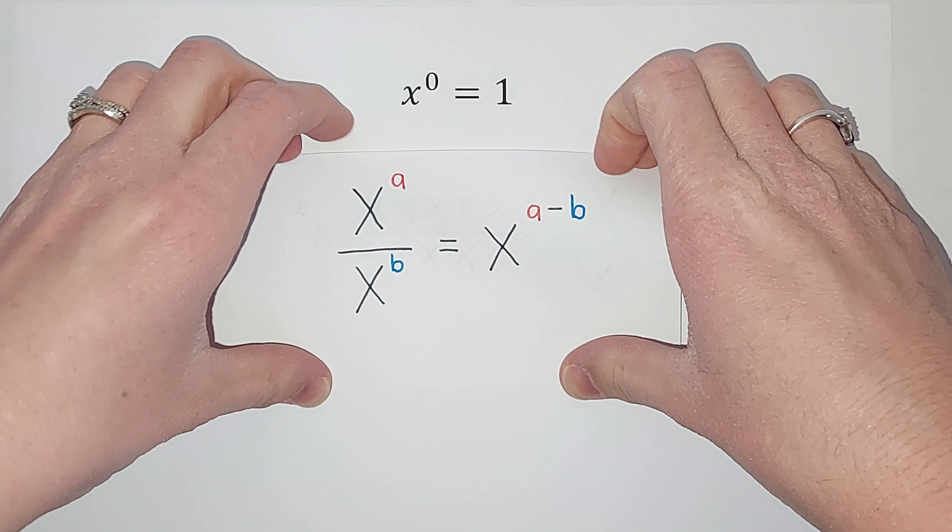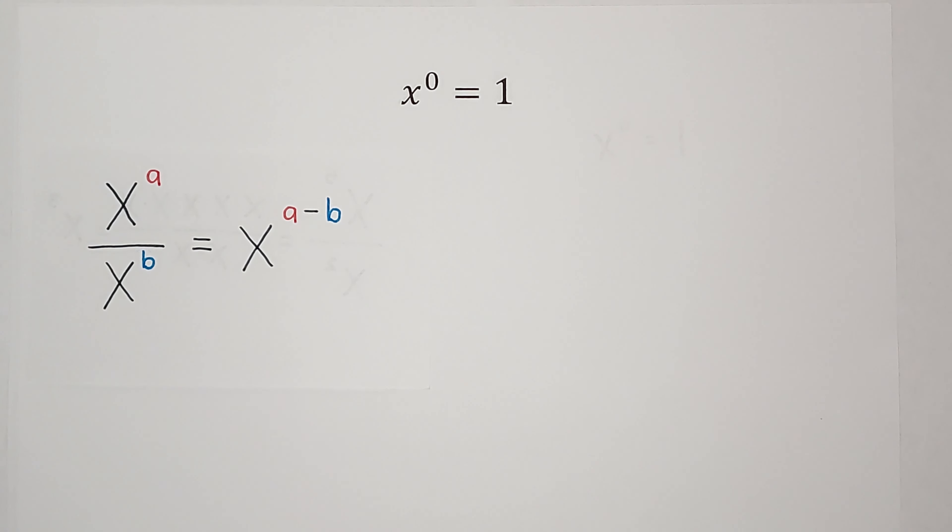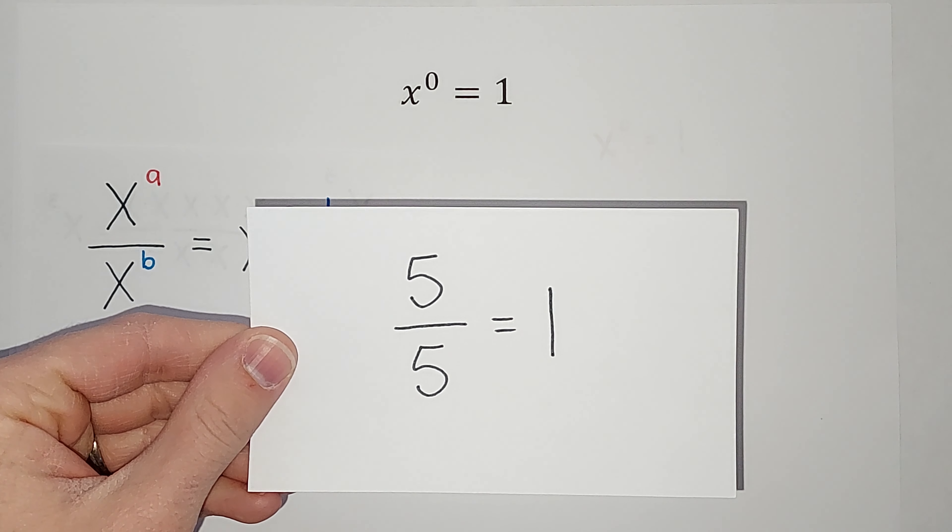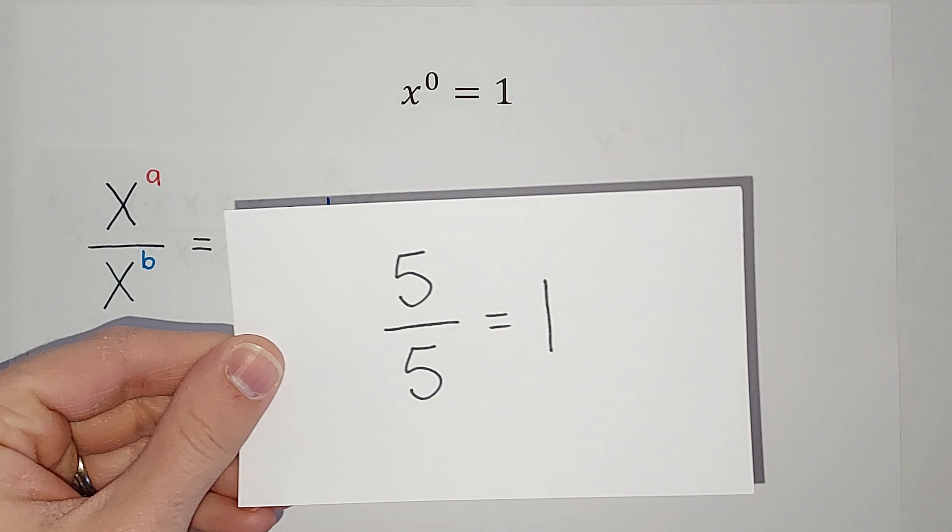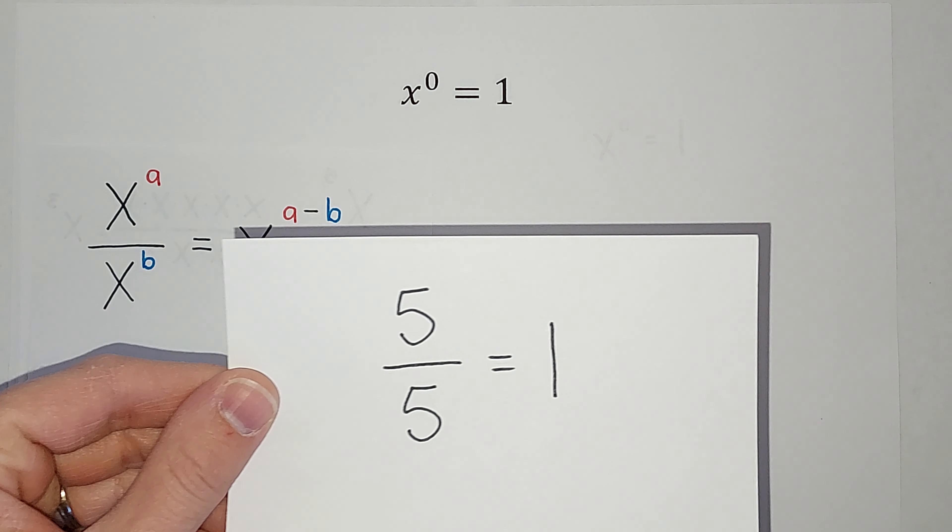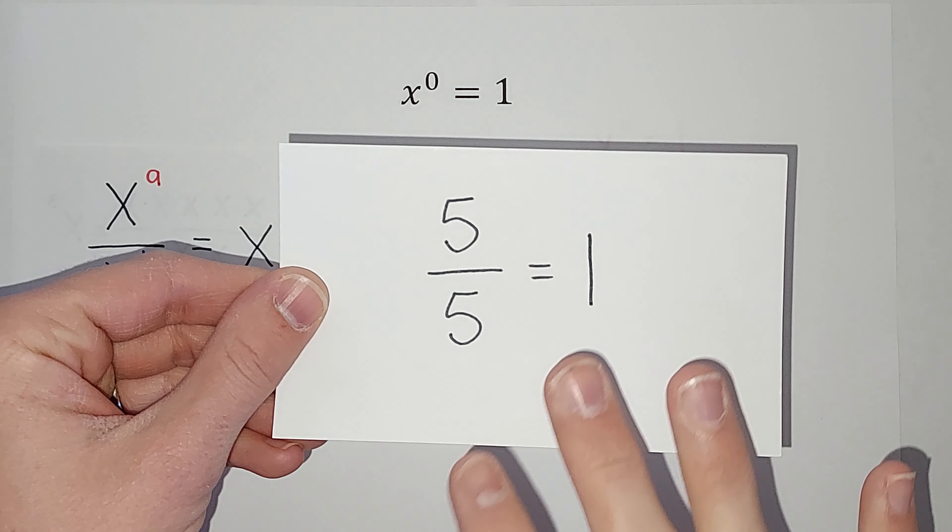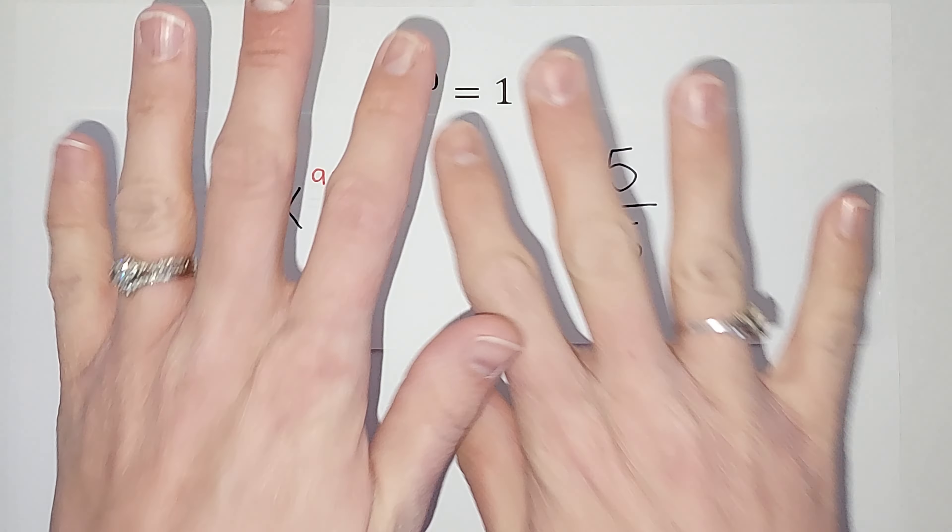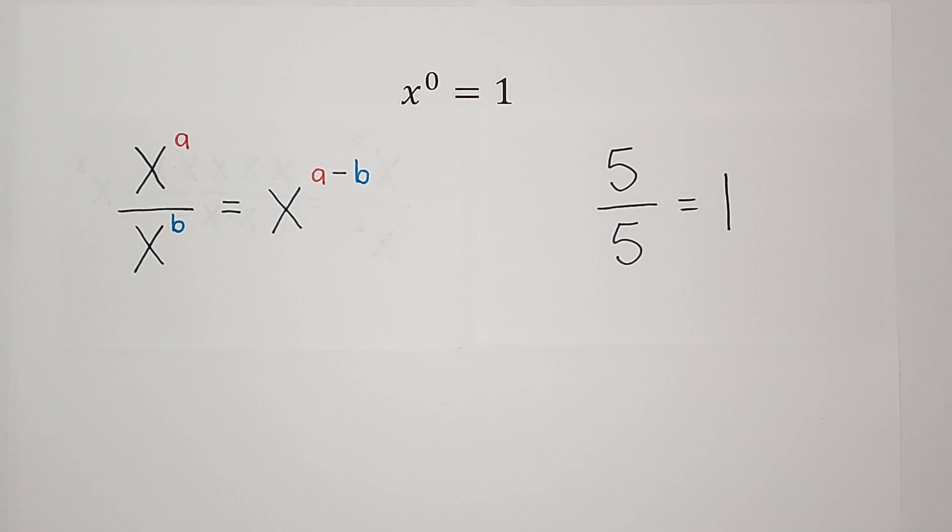That's the first thing we need to agree is true. The second thing you've probably been doing forever - we need to agree that when you have one number divided by itself, it's equal to one. Doesn't have to be a number, right? If you have a variable divided by itself, anything divided by itself is going to equal one.